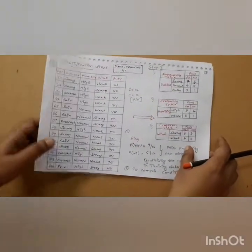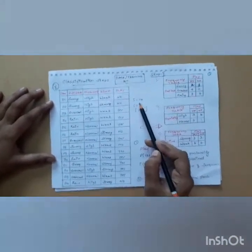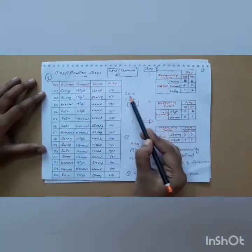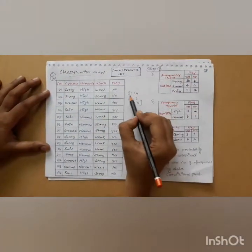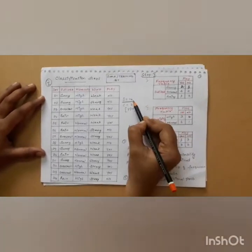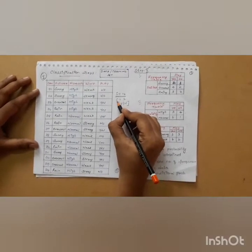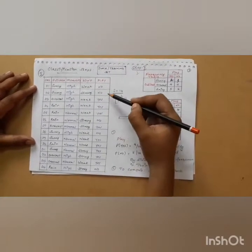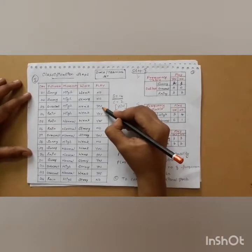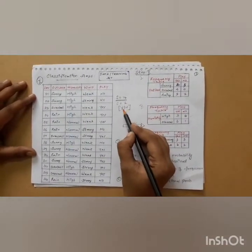In the given training dataset, you have to compute the total number of samples. The total number of samples in the training dataset is 14. C is equal to 2, which is the number of class labels — that is, yes or no.